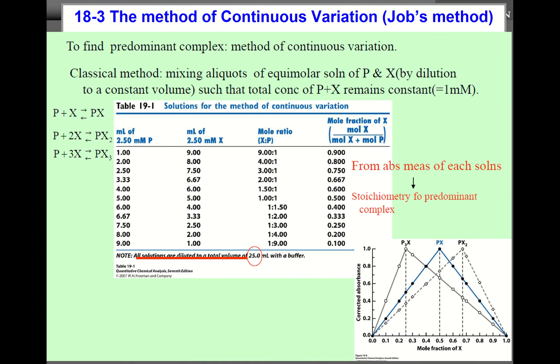Another example is determining the predominant complex. That method is called continuous variation. Another name is Job's method. Let's assume P and X react together to give PX. Or you don't know whether P reacts with two moles of X to give PX₂, or maybe three X's to give PX₃. So you don't know which species is predominant: PX, PX₂, or PX₃. How do you know? By spectrophotometry. The method is very ingenious, very clever.